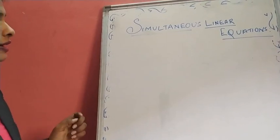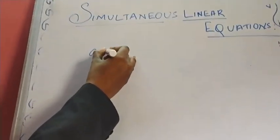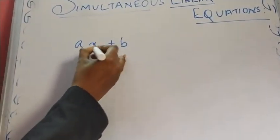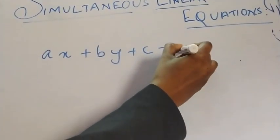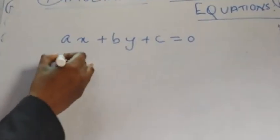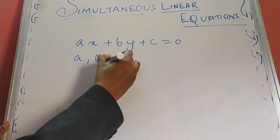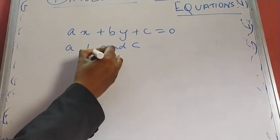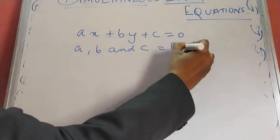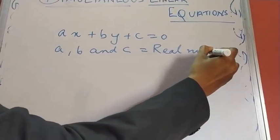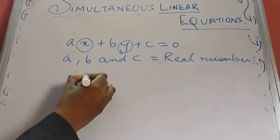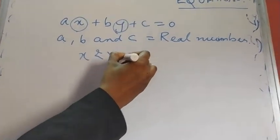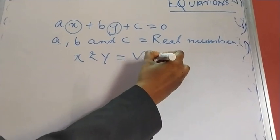Coming to this topic, a linear equation is expressed in the form Ax plus By plus C is equal to 0. Here A, B, and C are real numbers which are present in the linear equation, and X and Y are the variables.